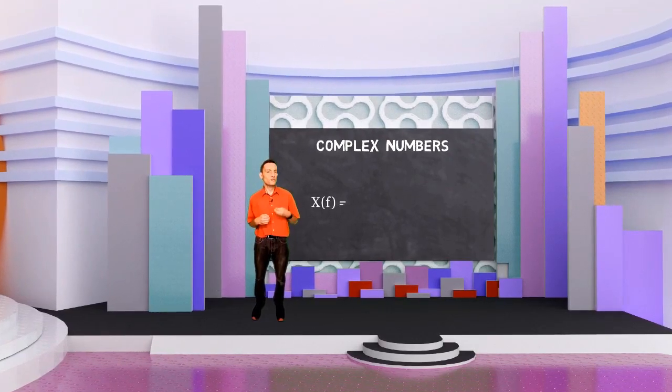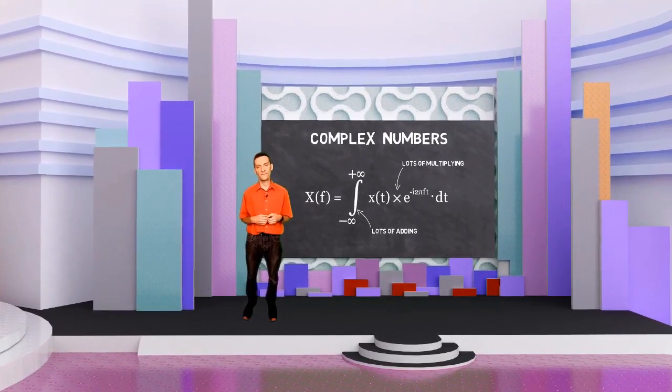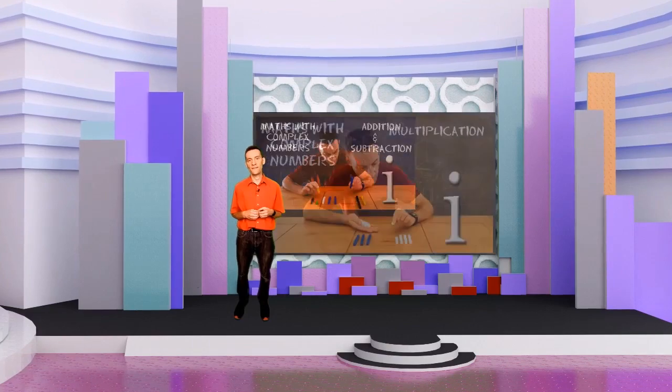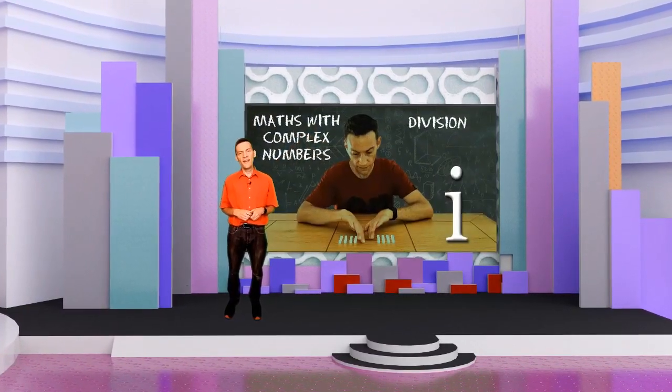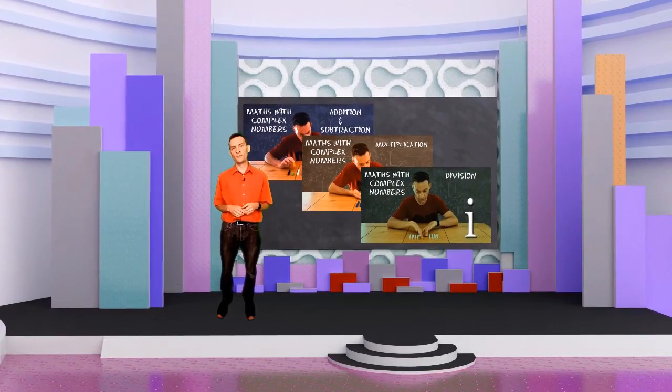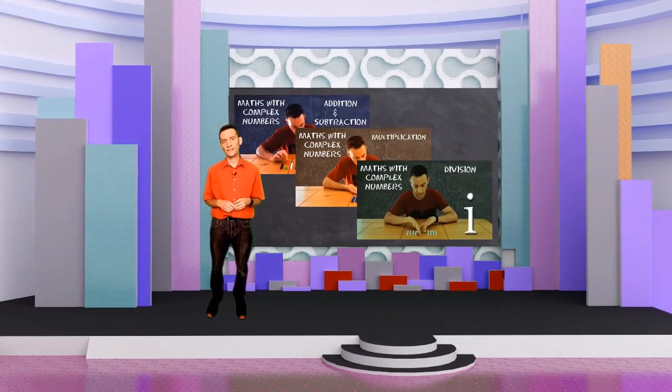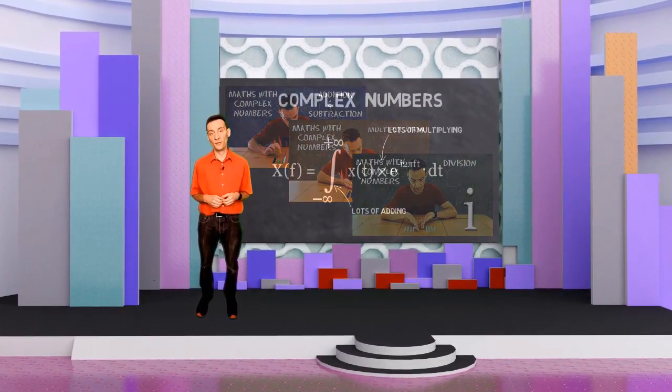In the Fourier transform, we have to do rather a lot of adding and multiplying of complex numbers. I covered those two operations in previous videos. In this video, we're going to cover division. Now, division isn't really used in the Fourier transform, but I thought we should cover it here for the sake of completeness. After all, complex numbers are used in other places apart from just the Fourier transform.